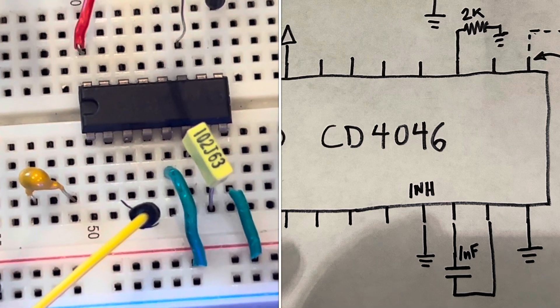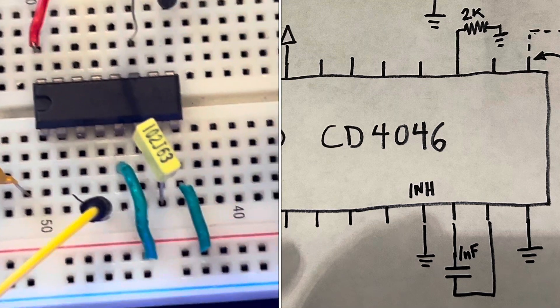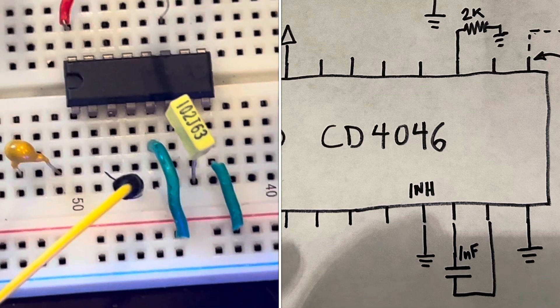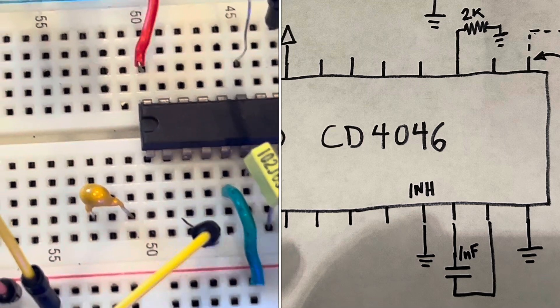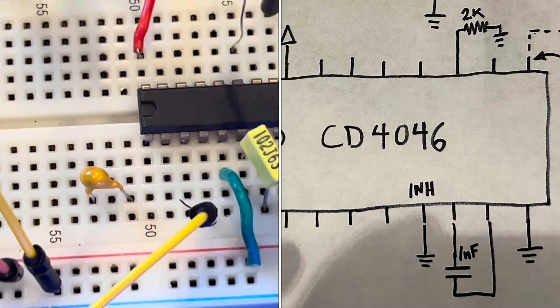Basically, all the other pins are not used other than VCC and ground, and pin 5, which is this one right here, is an inhibit pin, so it goes to ground.